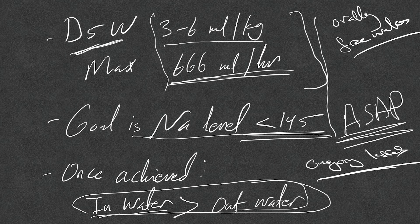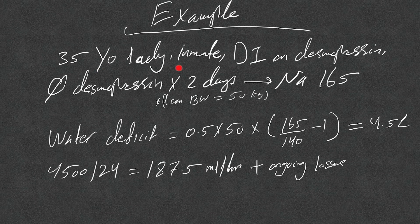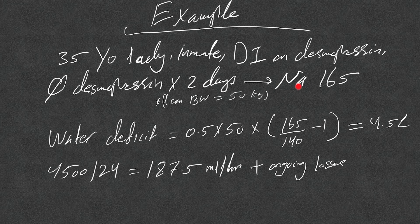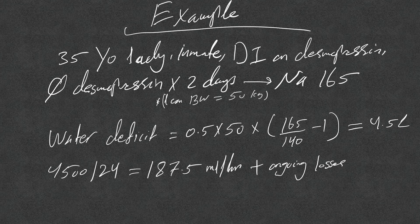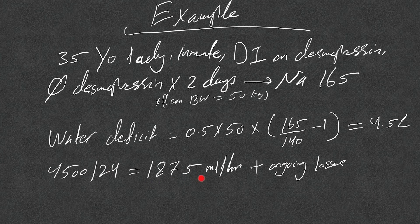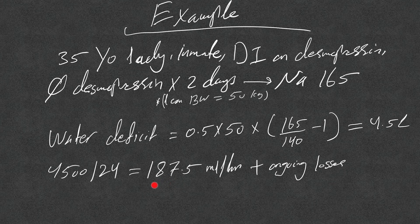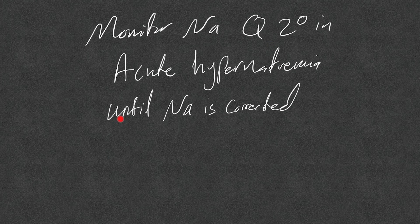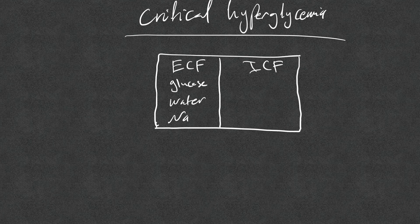Let's take this example. 35 year old lady inmate with diabetes insipidus, central DI on desmopressin. She stopped desmopressin for two days. Sodium 165. Lean body weight was 50 kilos. So water deficit is 4.5 liters, so I need to give this within one day as soon as possible. 4500 divided by 24, that means 187.5 ml per hour plus ongoing loss. So I can give it as D5W or half NS double the rate, or you can give it as free water, plus ongoing losses. In acute hypernatremia, you need to monitor sodium every two hours until sodium is corrected, very important. So you may need to put them in ICU, these patients, in order to get these labs on time.